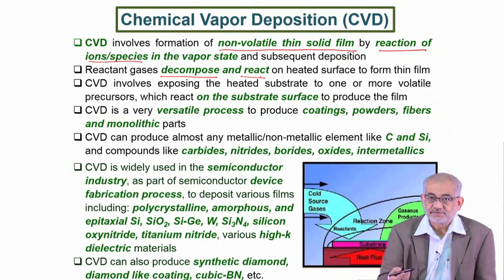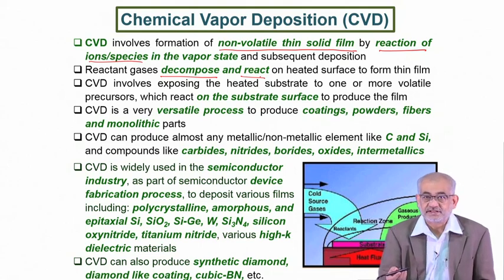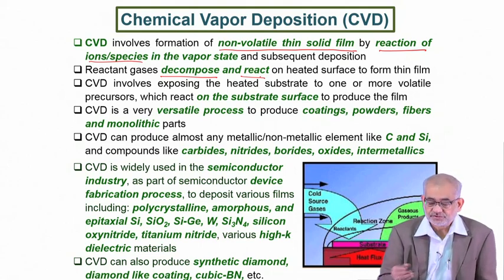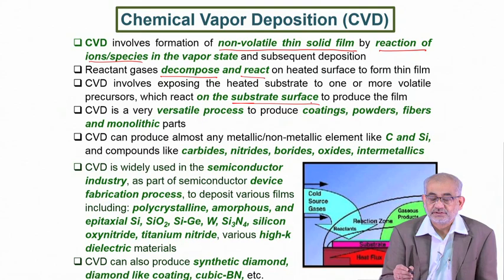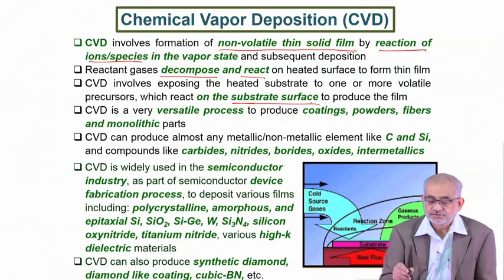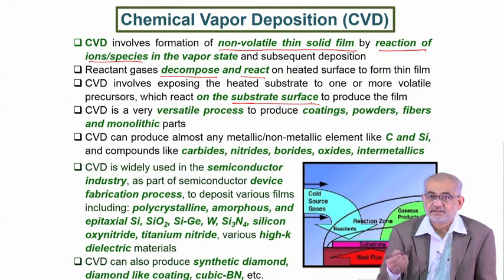The deposit can be atomic species, a compound, a mixture, or even a composite. The reaction that happens onto the substrate surface is very important because this reaction makes the coating adherent. The substrate in this case acts as a kind of catalyst where the actual chemical reaction takes place.